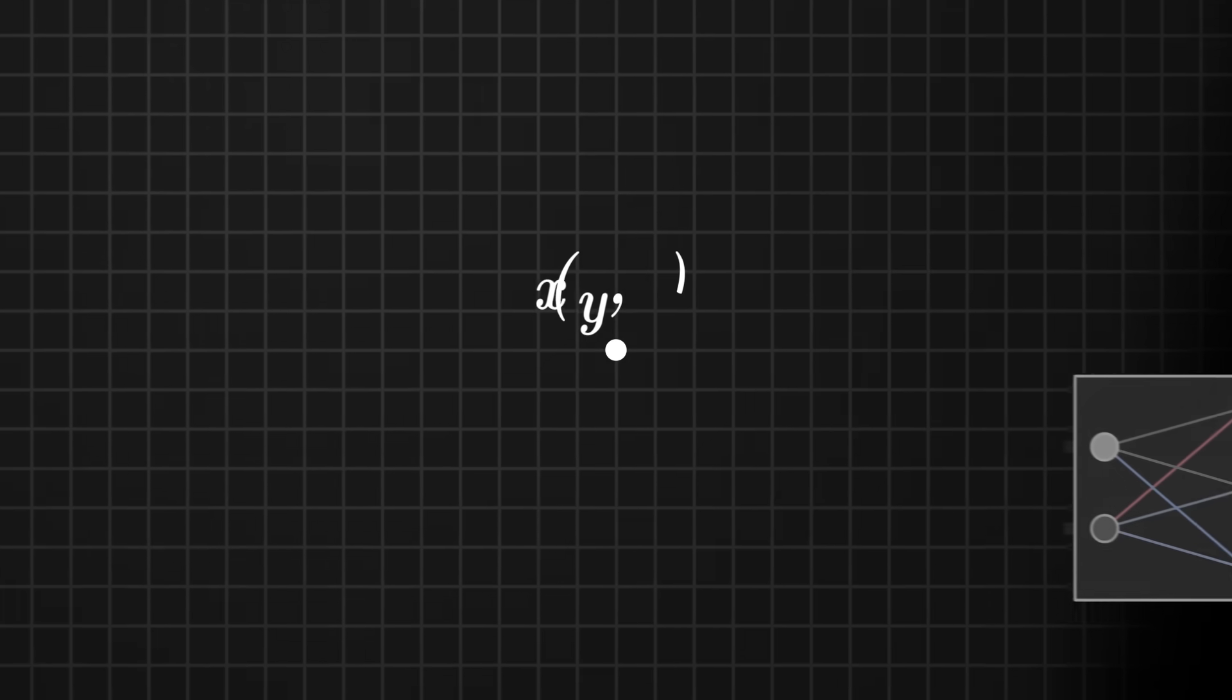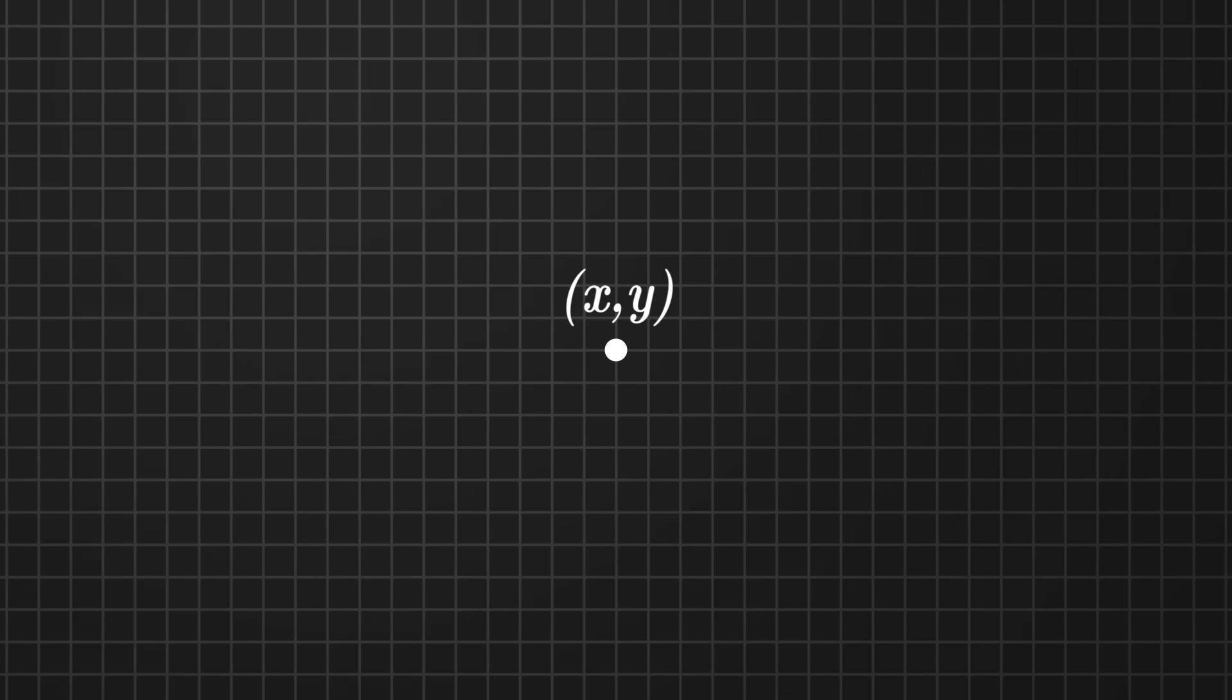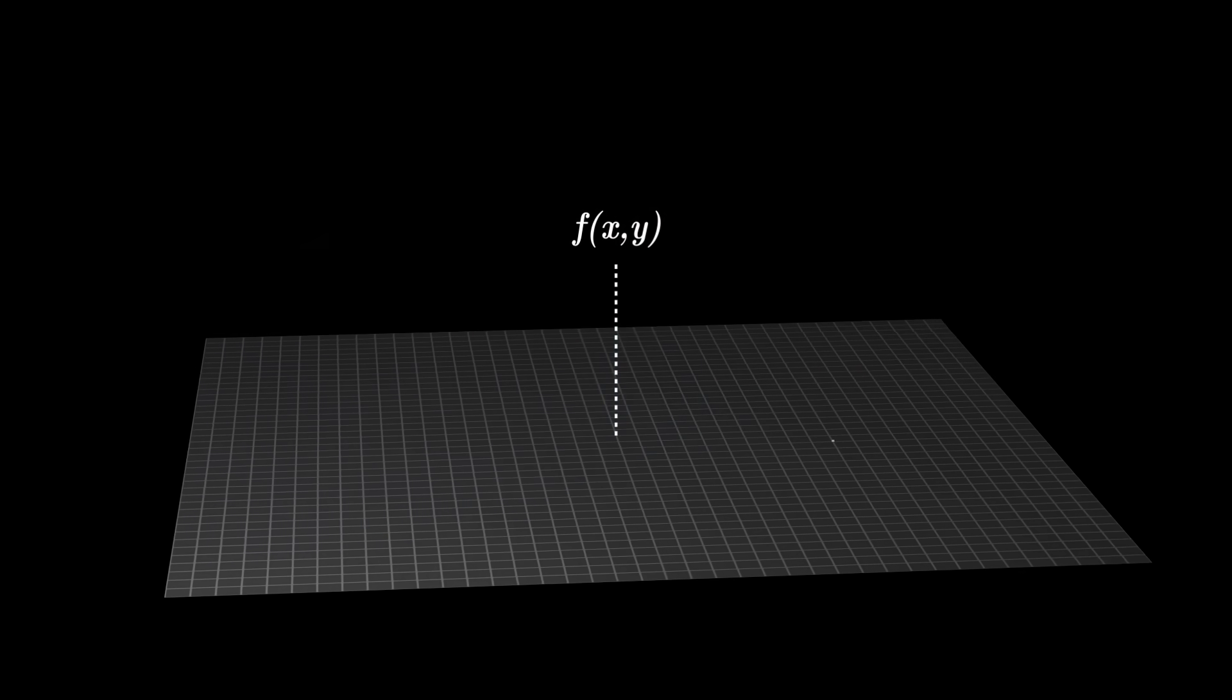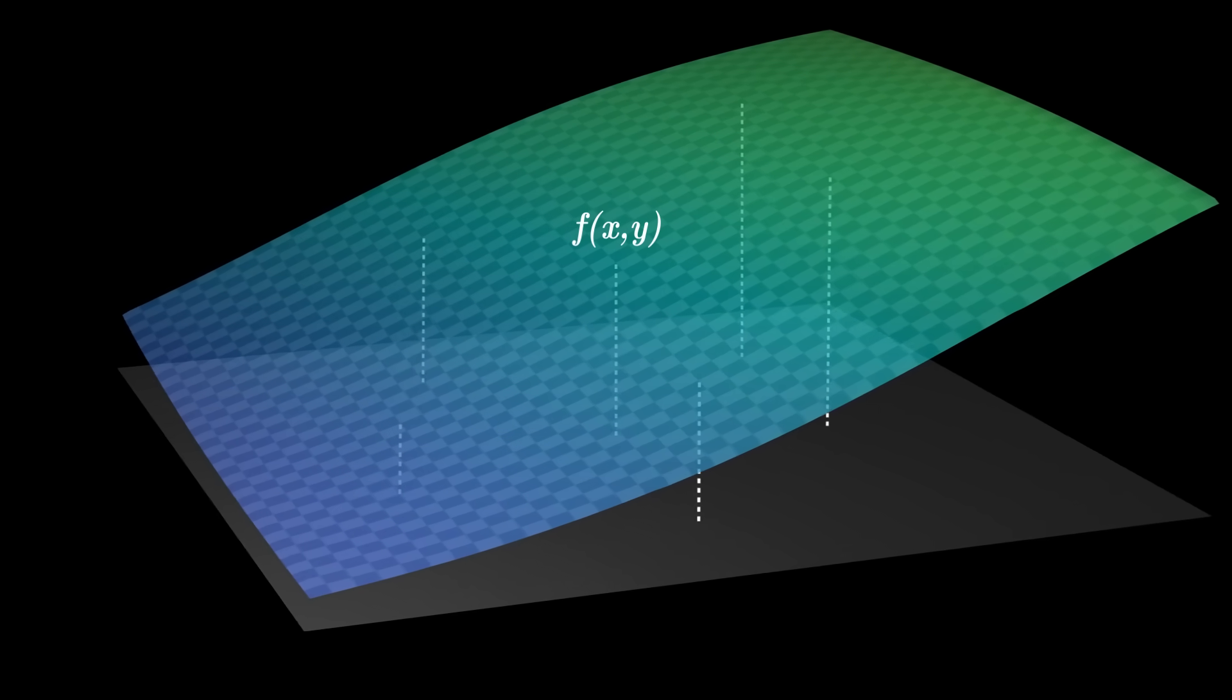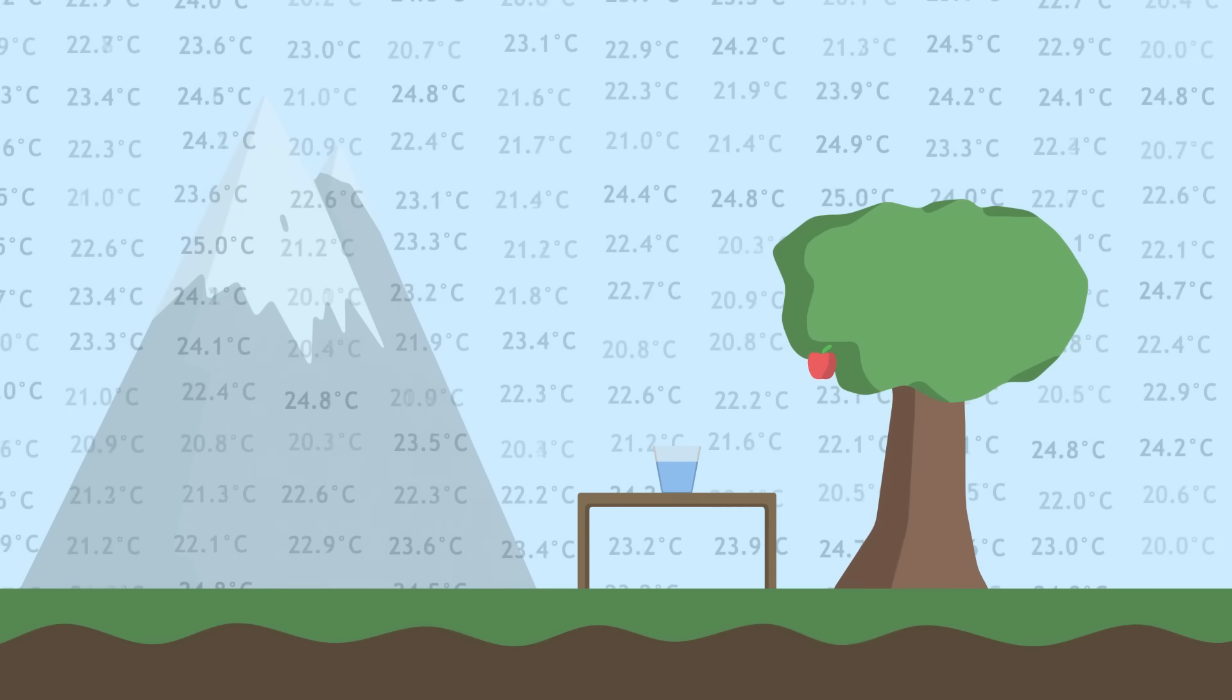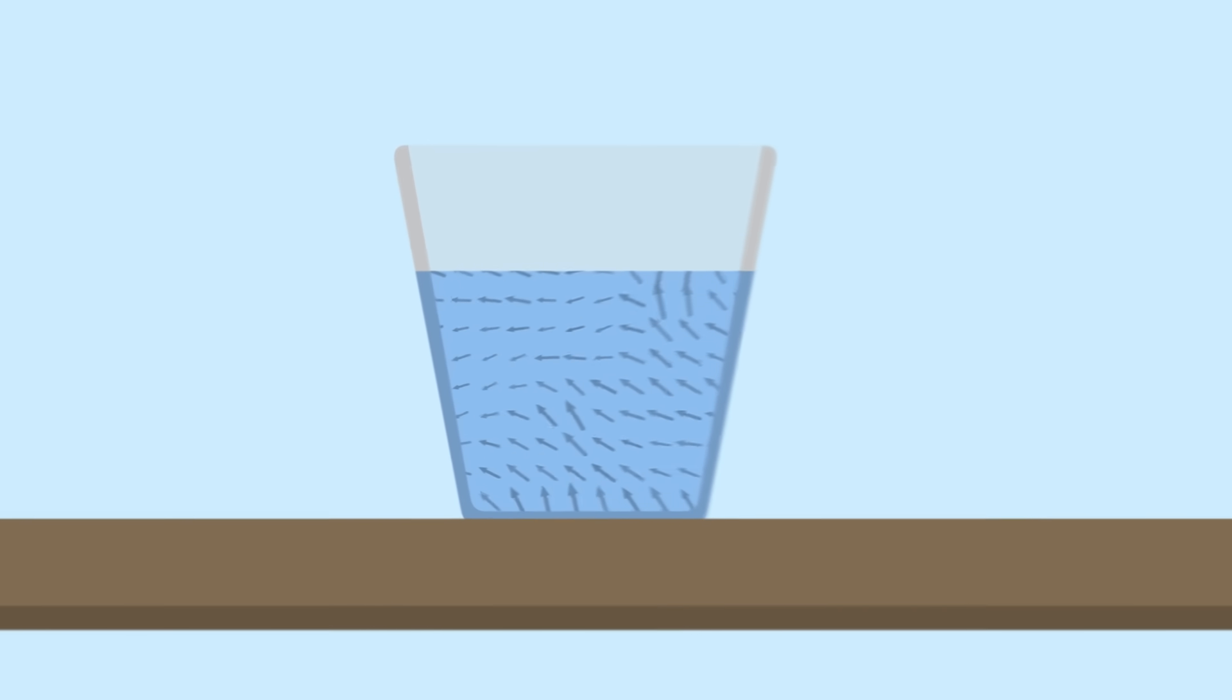We can represent the two input values as a point in two dimensions. Our neural network behaves like a field, assigning a value to every point in space. In physics, fields are very useful for describing temperature in the atmosphere, velocity in a fluid, or even gravity.